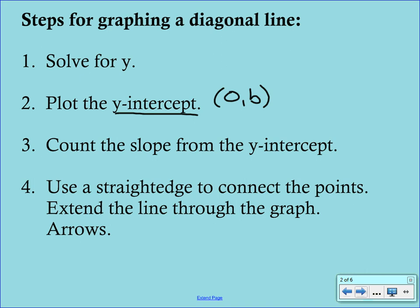After you have that point, you are going to start at the y-intercept and you're just going to count the slope. Remember that slope is just rise over run. So you're always going to go up or down first, and then move right or left.